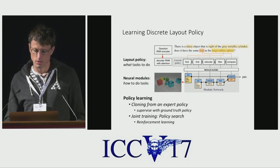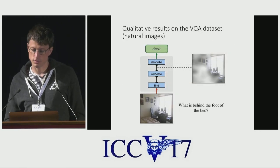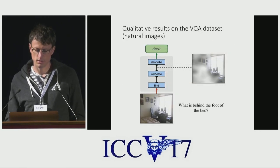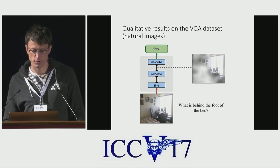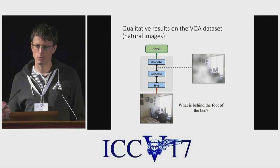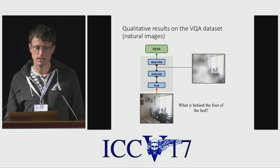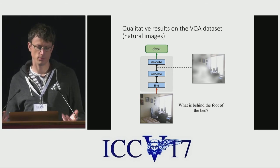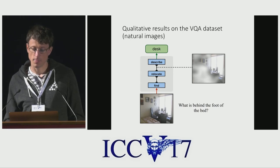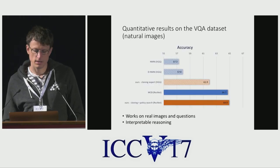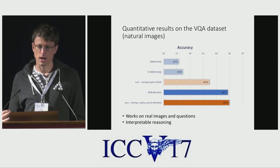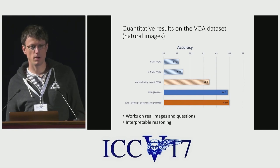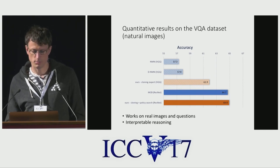Let's see how that works. First, a qualitative example on the VQA dataset: for the question 'what is behind the foot of the bed,' we first find the bed, then look for things which are behind it — in this case the desk — so we answer 'desk' correctly. Quantitatively, prior work is shown in blue and our work in orange, and we perform comparatively, but our networks are more interpretable.